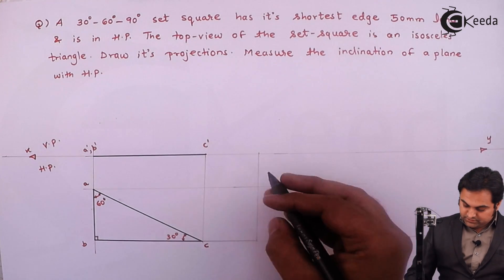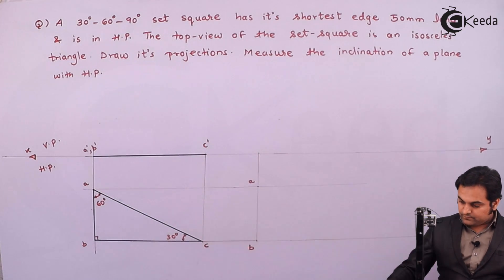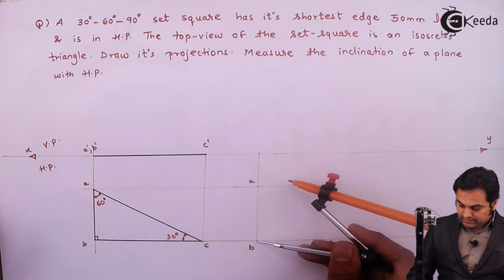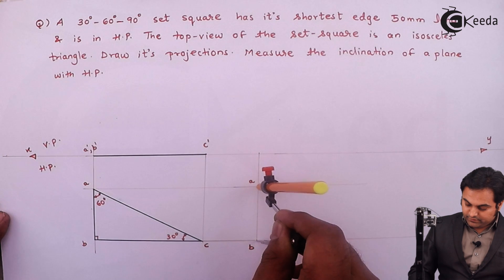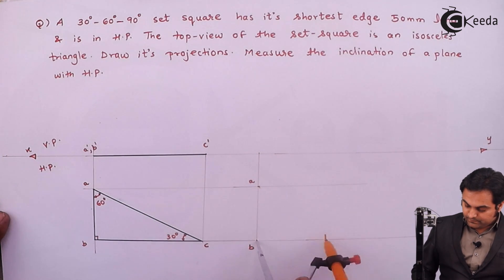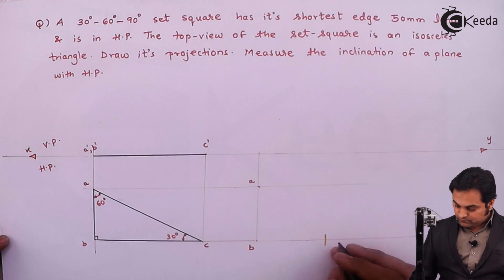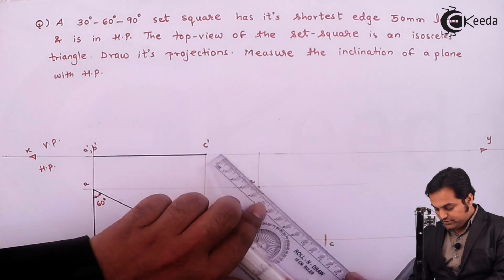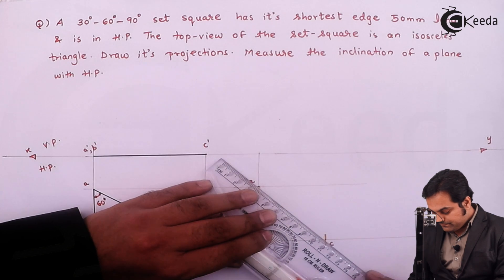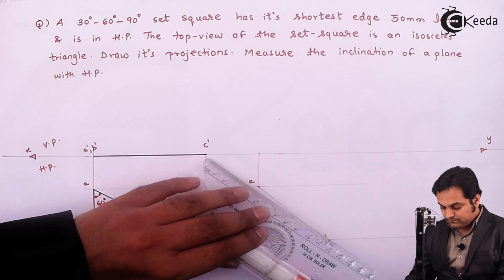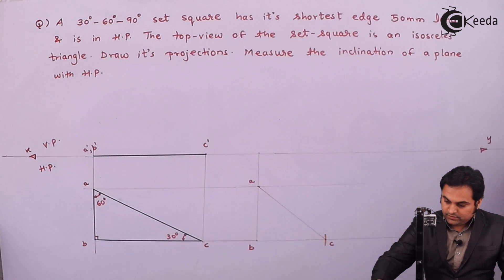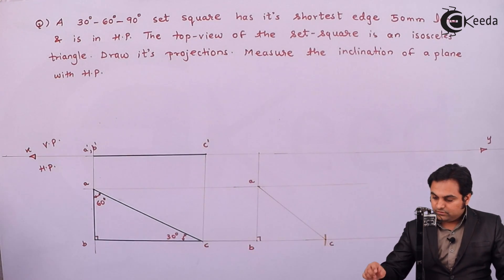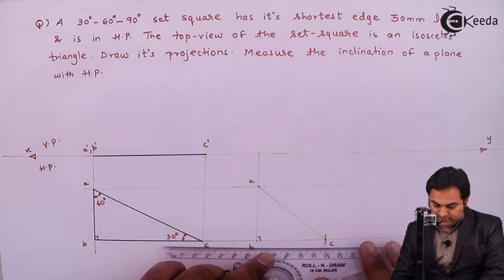Side AB will be constant and BC will be reduced. I'll measure the distance AB, and since I want an isosceles triangle, I cut that distance here — this is point C. Joining them, here the isosceles triangle ABC is formed in which sides AB and BC are equal. I'll make them dark.